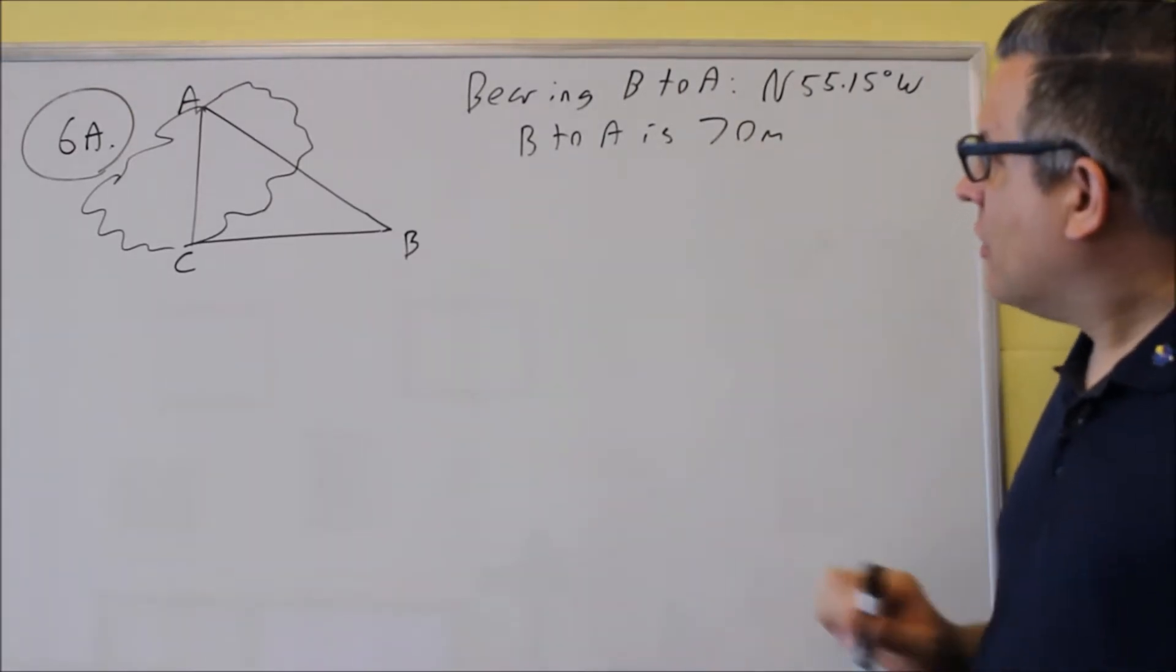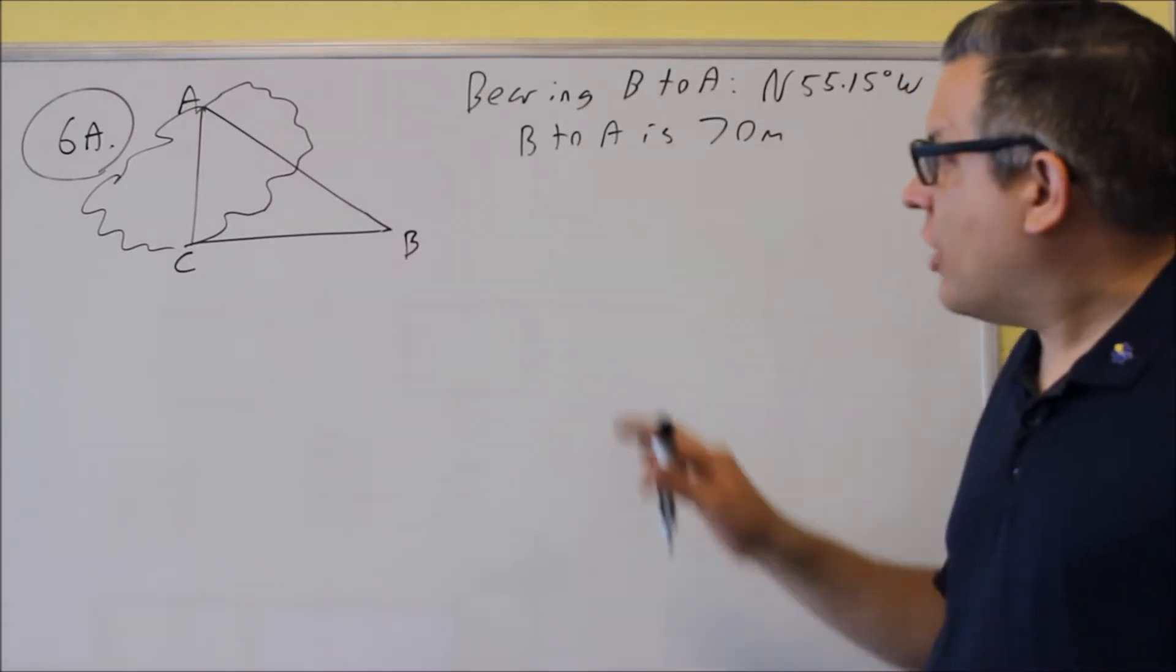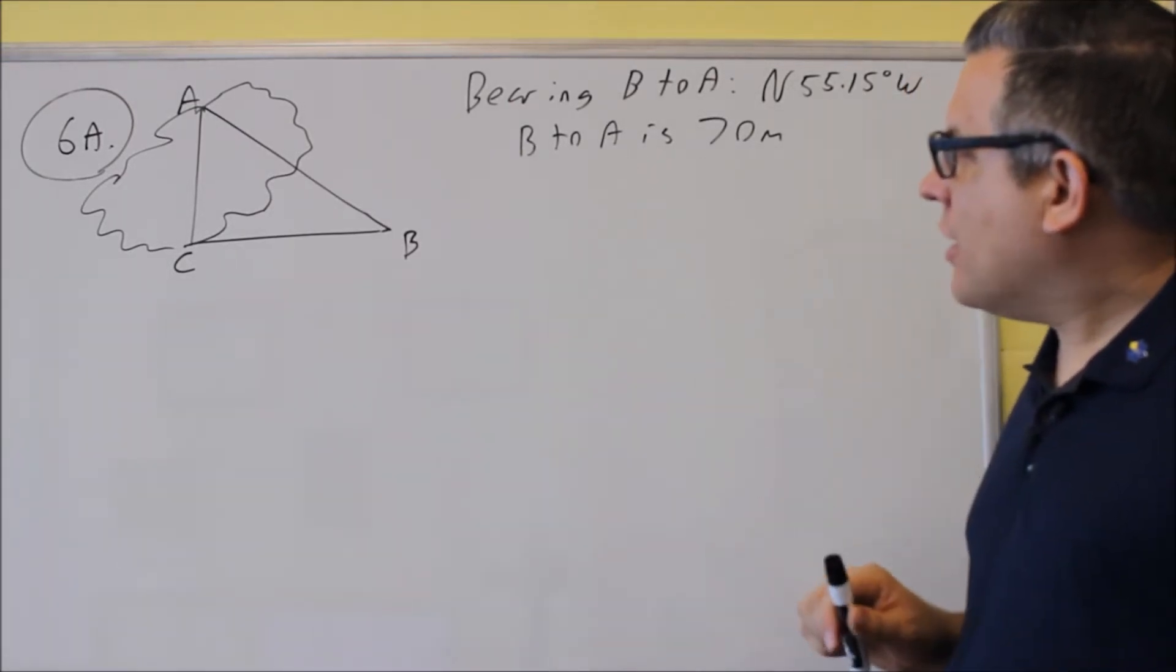They tell us that the bearing from B to A is north 55.15 degrees west, and your distance from B to A is 70.